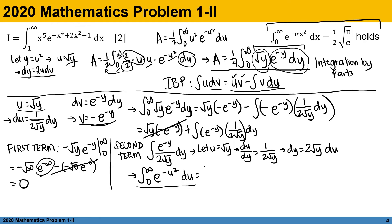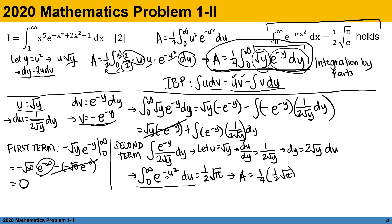This integral equals one half square root of pi, because alpha equals 1. From the expression for A, which is one fourth of this integral, we have one fourth times one half times square root of pi, giving us A equals one eighth of the square root of pi.